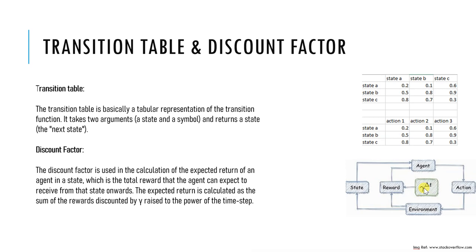A value of gamma closer to 0 means the agent cares more about long-term reward. The discount factor is used in the calculation of the expected return of an agent in a state, which is the total reward the agent can expect to receive from that state onwards. The expected return is calculated as the sum of rewards discounted by gamma raised to the power of the timestamp.